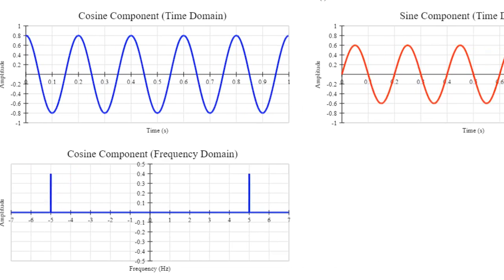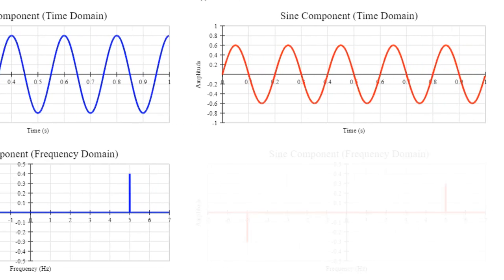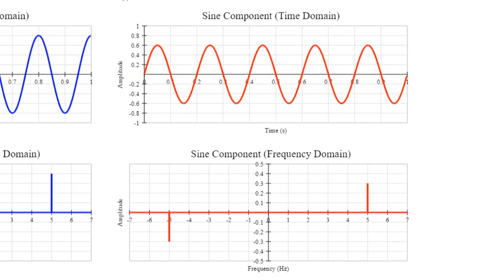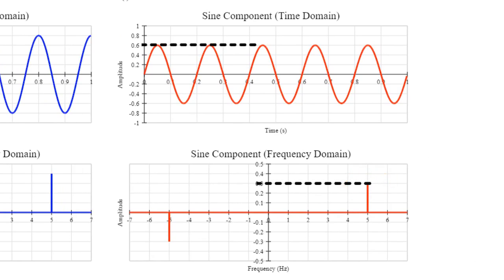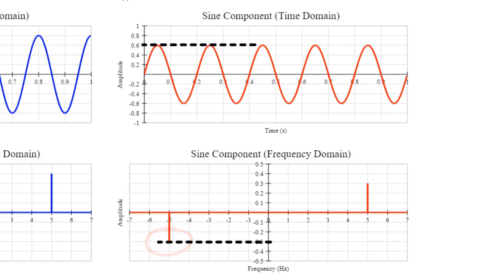Looking at the frequency domain representation of the sine component, something similar happens. At the 5 Hz frequency, the amplitude is half of that shown in the time domain graph. But at minus 5 Hz, the amplitude is minus a half of the time domain amplitude. What's going on here? And what's this negative frequency?